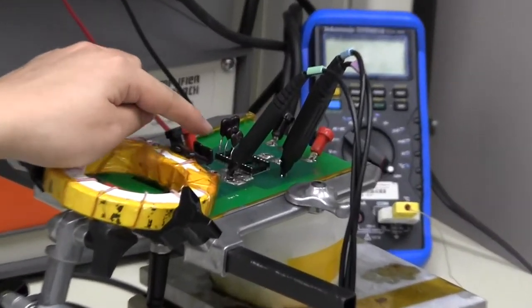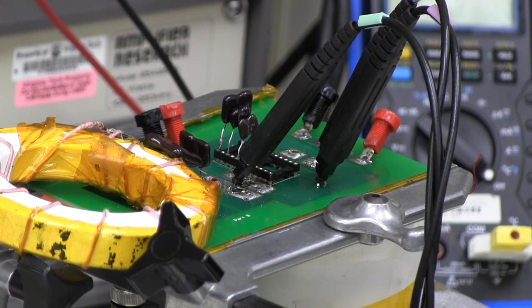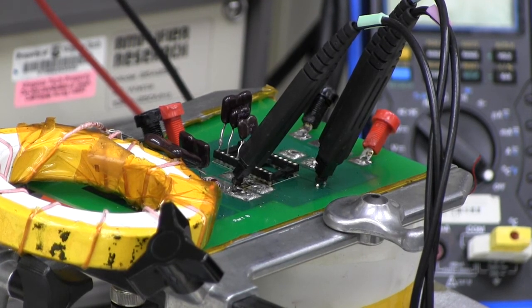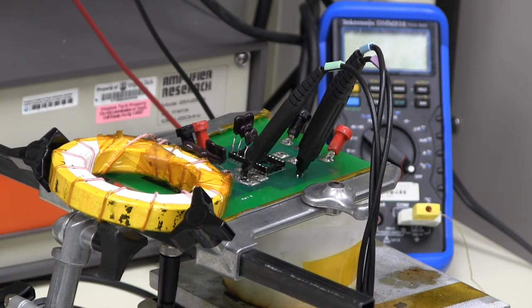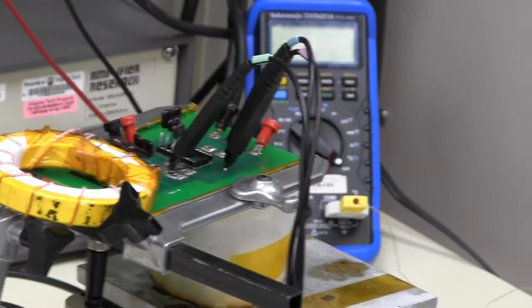This core sample is excited by this power amplifier driven by a function generator. On the board, you can see there is a group of capacitors, and these capacitors are used as resonant capacitors to cancel the reactive voltage on the core sample.